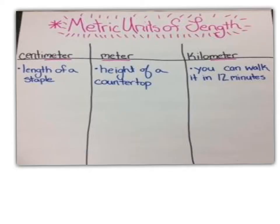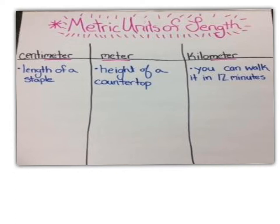Now we are going to begin discussing metric units of length and how big they actually are. To successfully solve metric problems, we have to understand what the metric system is. Here are a few examples: centimeters, meters, and kilometers. When you think of a centimeter, think of the length of a staple. When you think of a meter, look at the height of our countertop — about one meter from the floor to the top. A kilometer is the distance you can walk in about 12 minutes; it's less than a mile. Think of benchmarks to help you remember the different metric units of length.